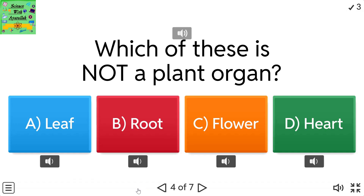Which of these is not a plant organ? A: leaf. B: root. C: flower. D: heart.